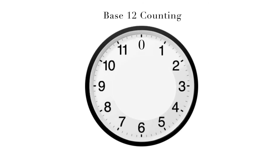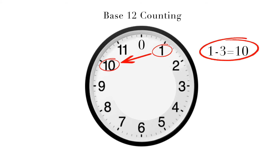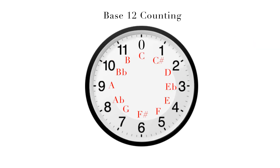Much like in tonal music, we have seven notes that repeat in a cycle. For this, it's helpful to think about it using a clock face. If I asked you what is three hours before 1 o'clock, you could easily tell me that it's 10 o'clock — 1 minus 3 equals 10. We can lay each of the pitch classes out on the clock face, starting with pitch class C at 12 o'clock.